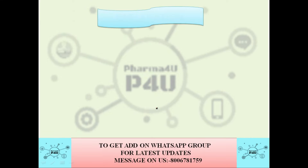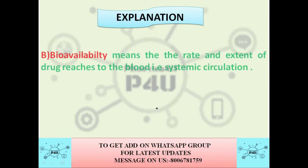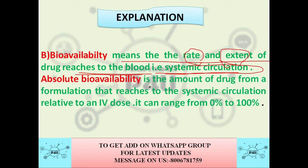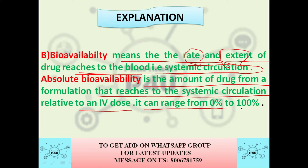Let us discuss with explanation. Bioavailability means the rate and extent of drug that reaches the blood, that is systemic circulation — at what rate and at what amount the drug reaches into the blood. Absolute bioavailability is the amount of drug from a formulation that reaches the systemic circulation relative to an IV dose, and it can range from 0 to 100 percent.